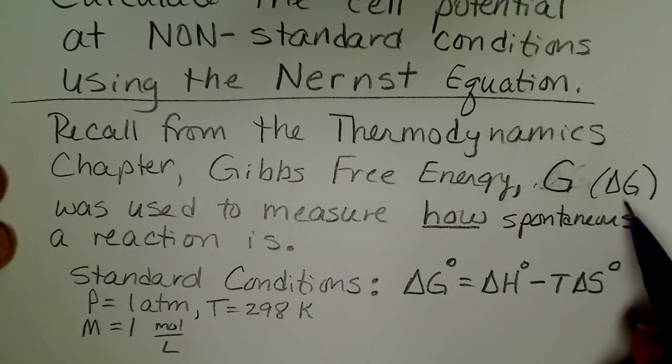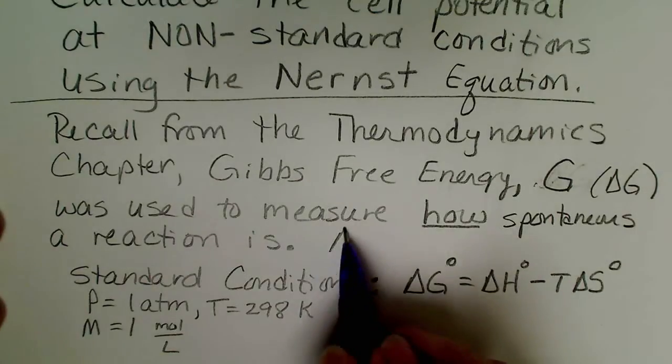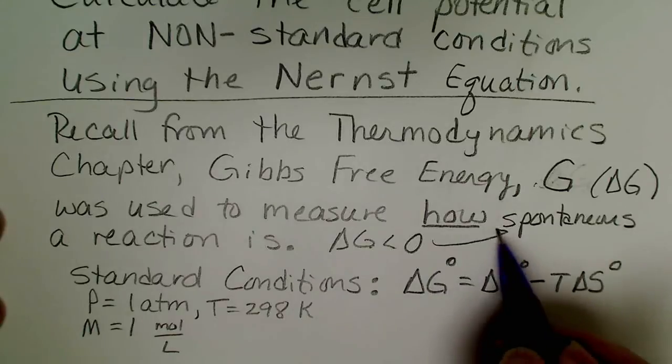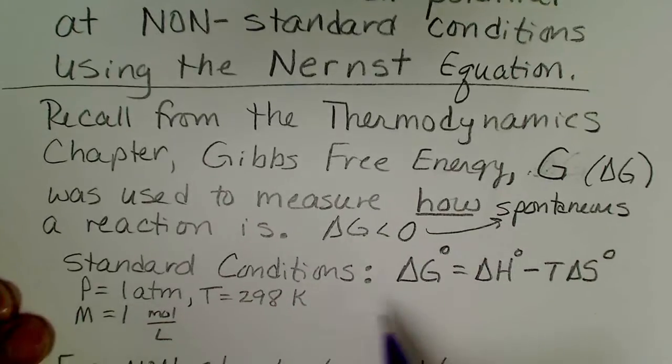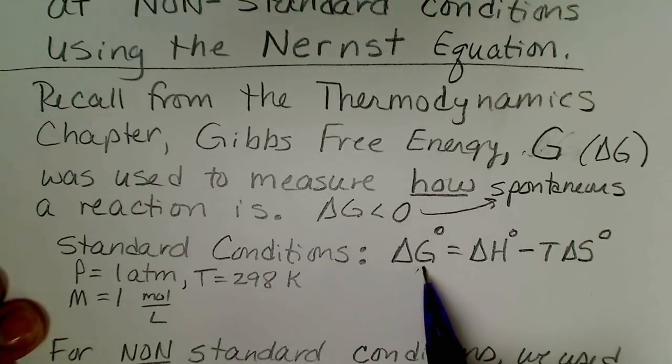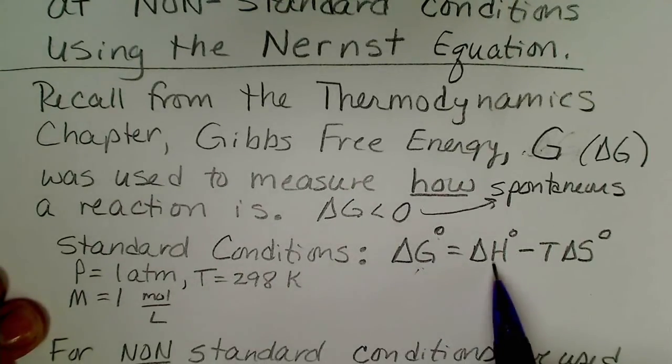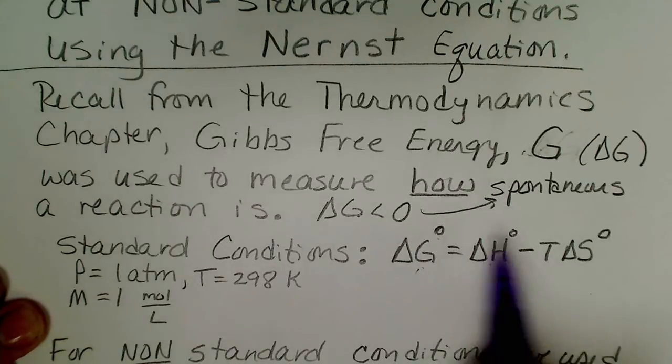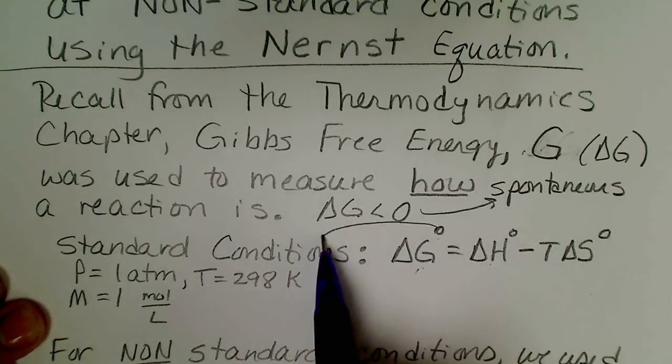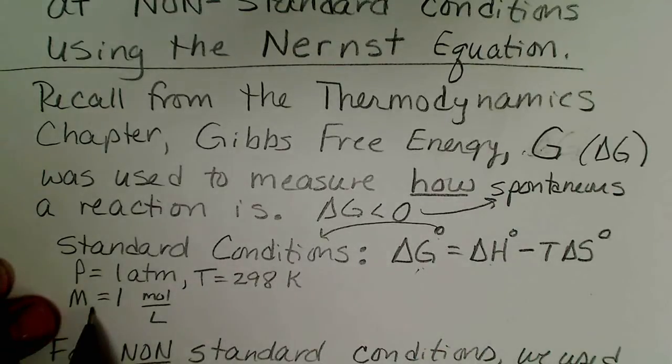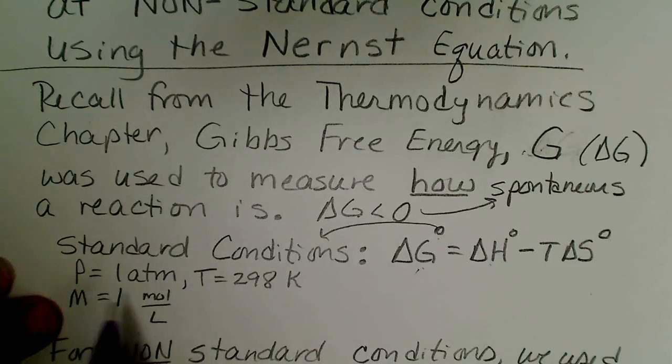So a negative value for delta G means the reaction will proceed without outside intervention and a famous equation that we used quite frequently was delta G° equals delta H° minus T delta S°. So this little circle means standard conditions.